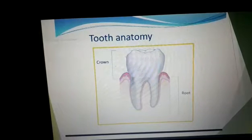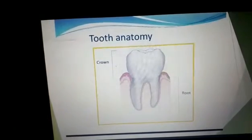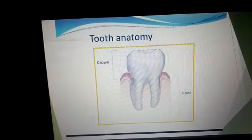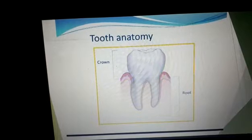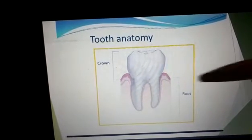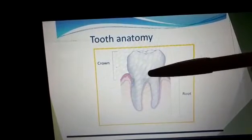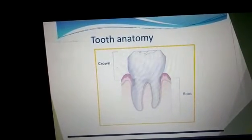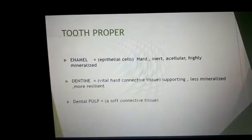The clinical crown denotes that part of the tooth which is visible in the oral cavity. It shows the size and shape of the incisors and molars. Histologically they are almost similar. The root is the embedded portion of the tooth, and the junction between them is the cervical margin.